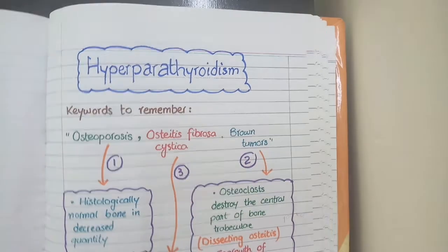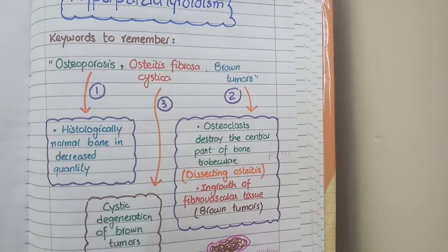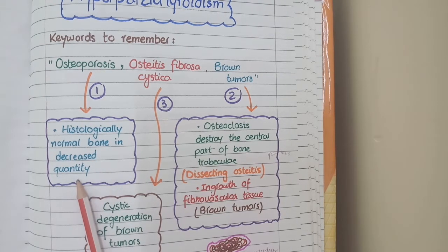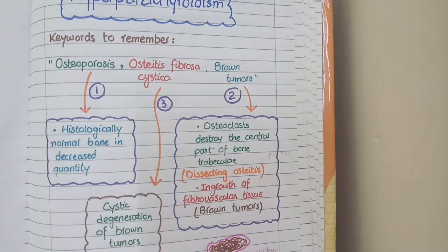The first characteristic abnormality caused by hyperparathyroidism is osteoporosis. This osteoporosis is visible microscopically as histologically normal bone that is just decreased in quantity. In osteoporosis caused by hyperparathyroidism, there is no change in quality of bone — there is just a decrease in quantity of bony matrix.